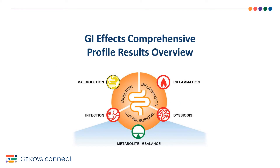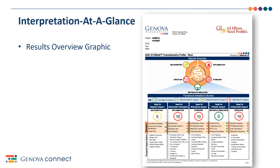Now that we have a good foundation of the GI tract as it relates to the GI Effects Stool Profile, let's look at the various features and components of the profile. Every marker we will discuss will fall under either D for digestion and absorption, I for inflammation and immunology, or G for gastrointestinal microbiome. Here's the first page of your results. Please seek counsel from your primary care clinician regarding your results and treatment options.